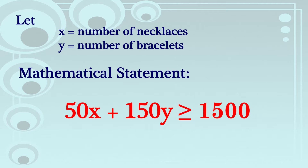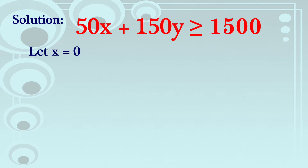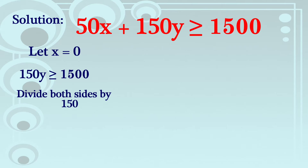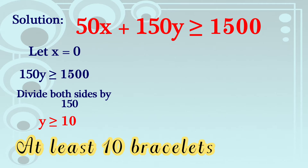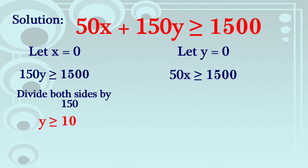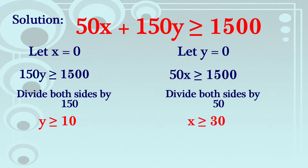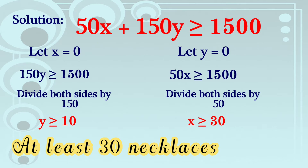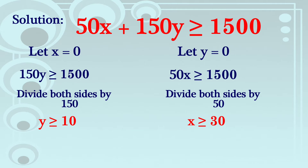Kukuha natin kung ilang pieces ng necklaces at bracelet ang kailangan para makabuo ng at least 1,500, gamitan lang natin ng X and Y intercept. Let X equal 0: 150Y ≥ 1,500, divide both sides by 150, so Y ≥ 10 — kailangan niya ng 10 bracelets. Let Y equal 0: 50X ≥ 1,500, divide both sides by 50, so X ≥ 30 — kailangan niya ng 30 necklaces.